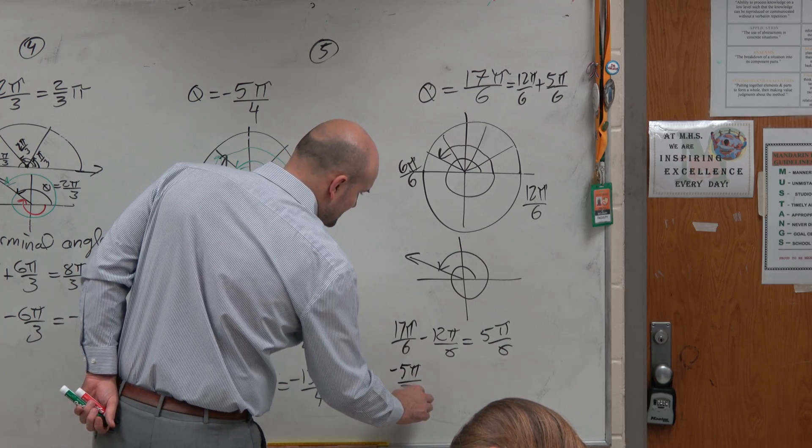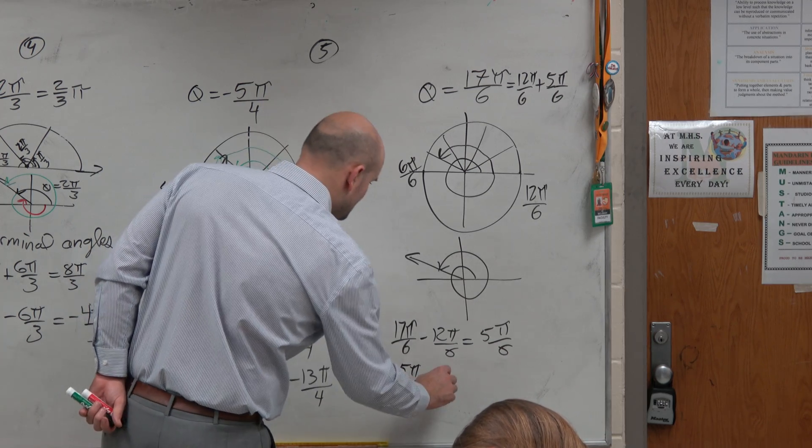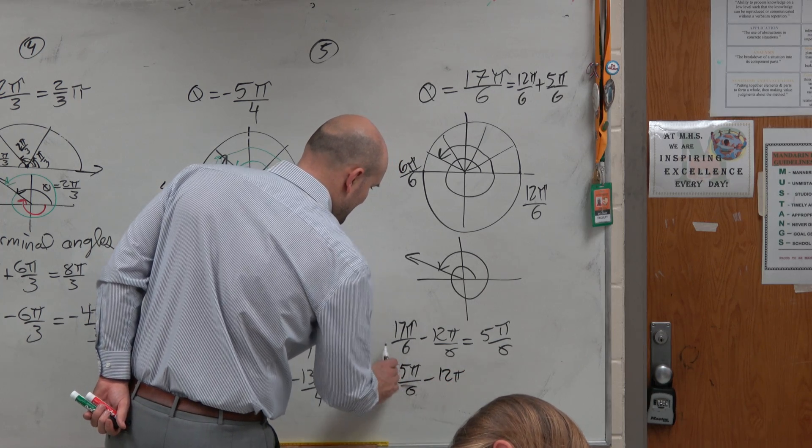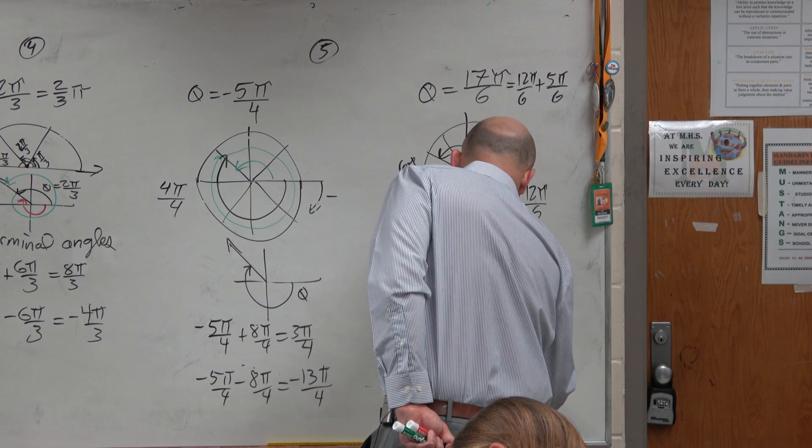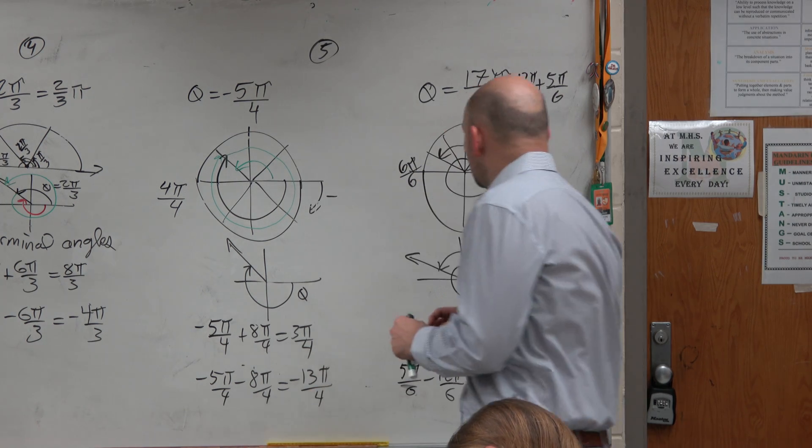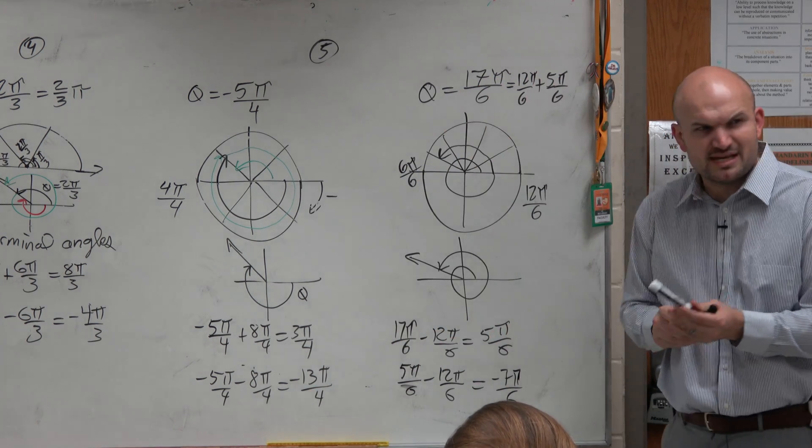I would take 5π over 6 and subtract 12π over 6 to give me negative 7π over 6. And let's look at it. Let's see if that makes sense.